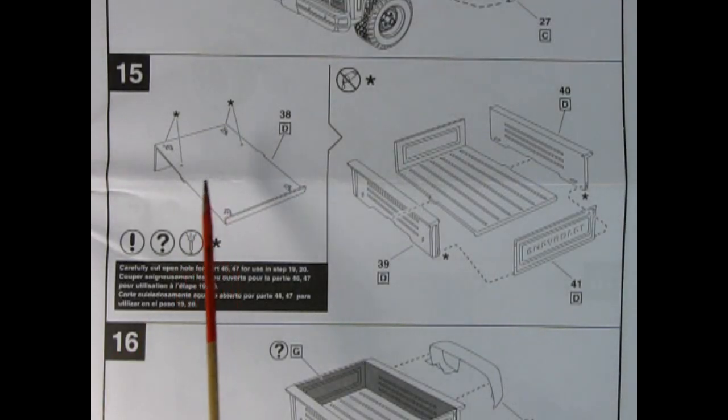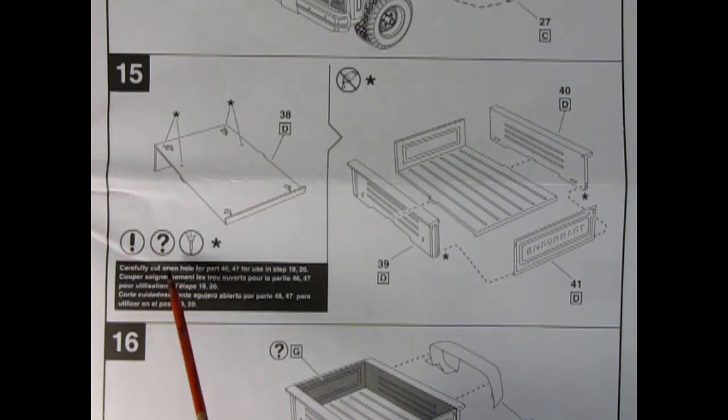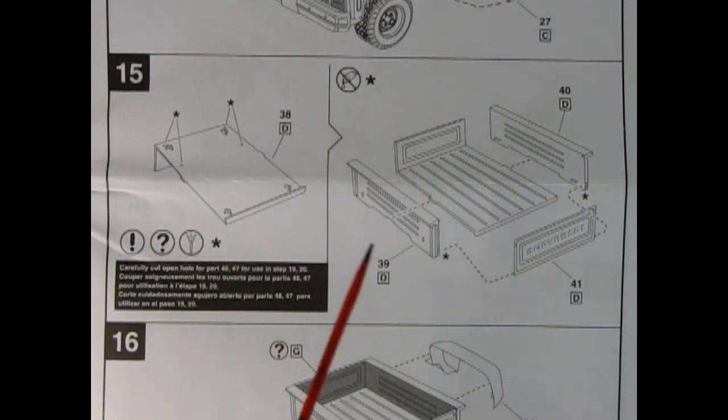Next up we have our truck floor boards, and this is being shown from the underside. There are four little holes that you can drill open if you want to add in that roll bar. If not, just leave them closed. Then we get these sides of the box being glued on, as well as the tailgate.